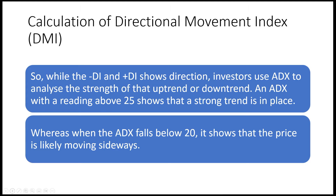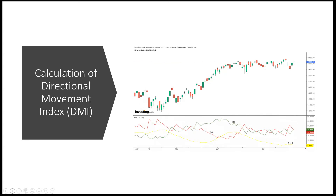While the minus DI and the DI plus show direction, investors use ADX to analyze the strength of the uptrend and the downtrend. An ADX reading above 25 means there's a strong trend in place, whereas if it falls below 20 it shows the price is likely moving sideways. ADX gives direction in terms of momentum, not bearish or bullish — it's only a measure of the strength of the trend, whatever the current trend is.